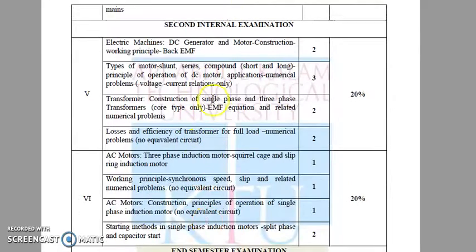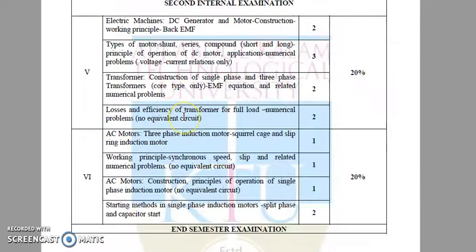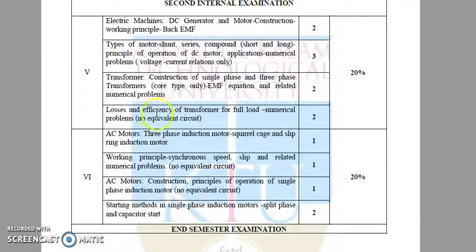The next two modules are the most important. Both have a weightage of 20% each — so 40 marks combined will come from the fifth and sixth modules. The fifth module consists of basic core concepts in electrical machines: DC generators and motors, working principles, types of DC motors, and also the transformer — construction, single-phase and three-phase. Numerical problems related to machines will be asked, as well as basic ideas on the types and working of different types of electrical machines.